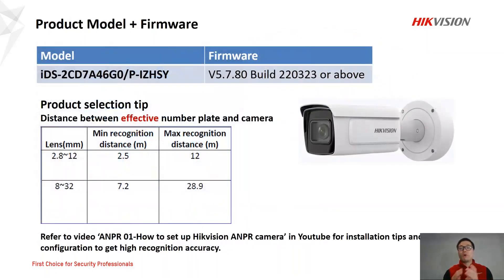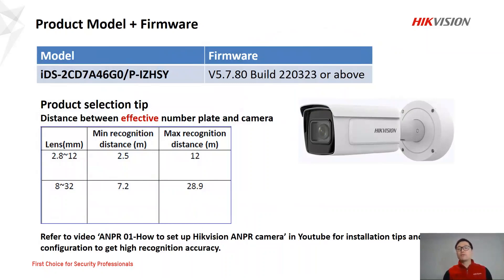In part two, it's about product models. We recommend using the full camera model numbers shown here, along with the firmware version. For product selection, we need to figure out the distance between the effective number plate and the camera, then choose the lens accordingly from this table. To get high recognition accuracy, please go to YouTube and search how to set up Hikvision ANPR camera for installation tips and configuration, then follow the tips and steps in that video.